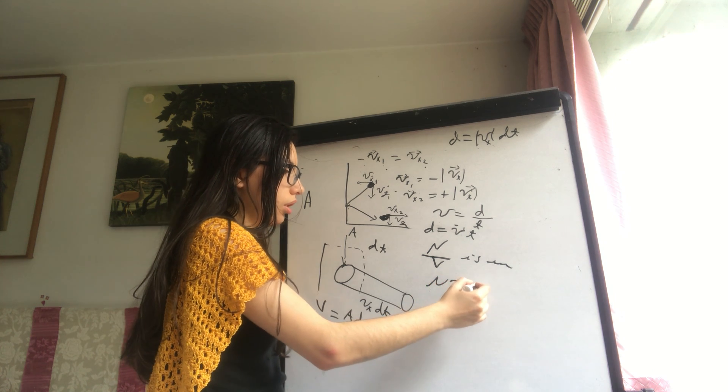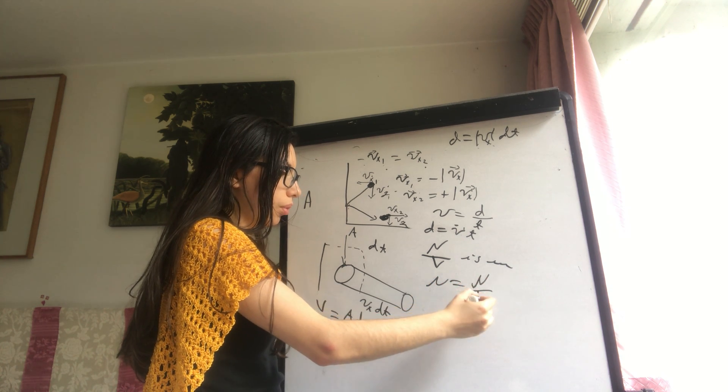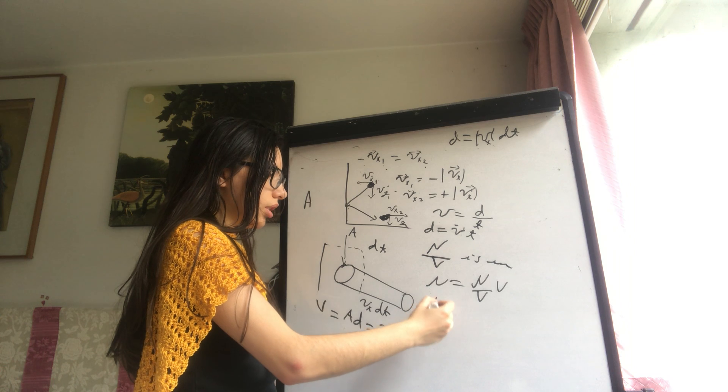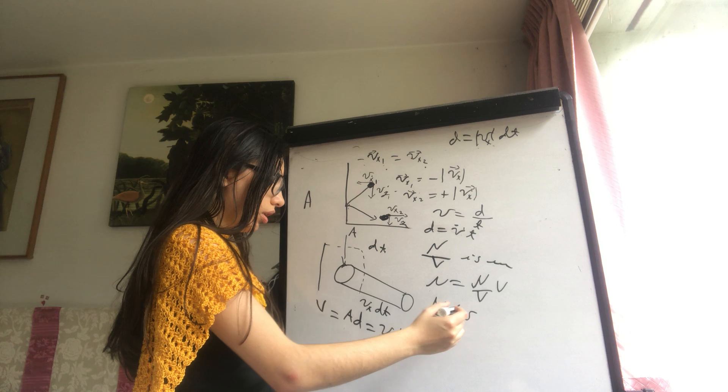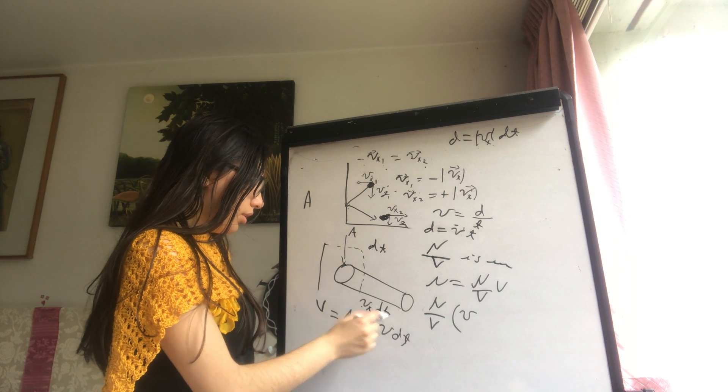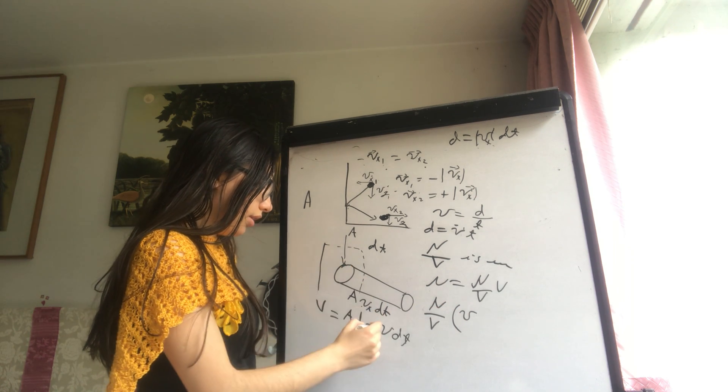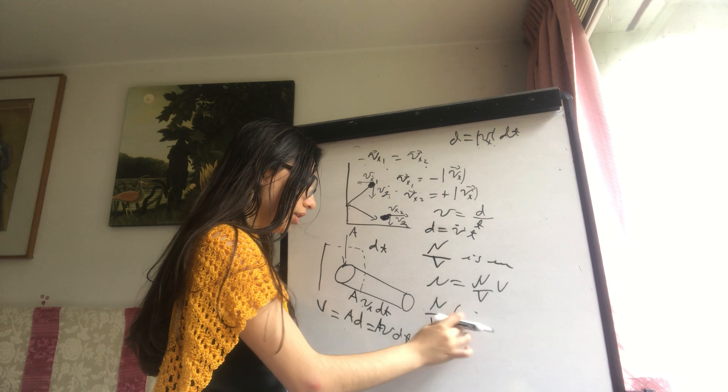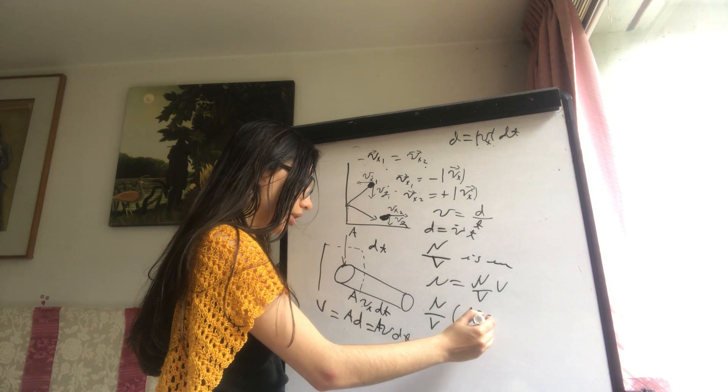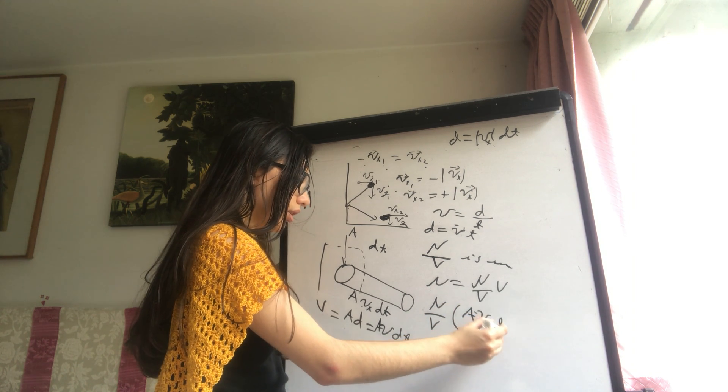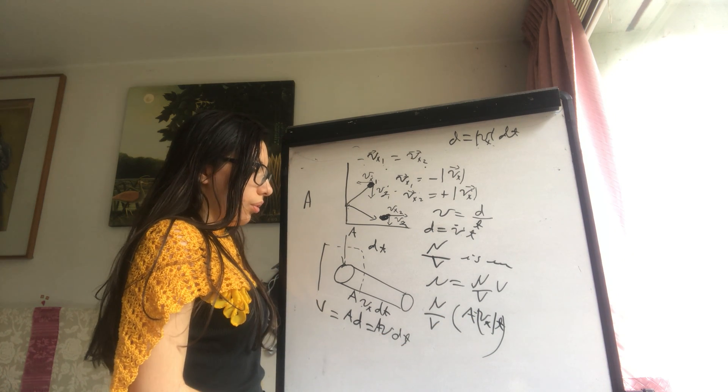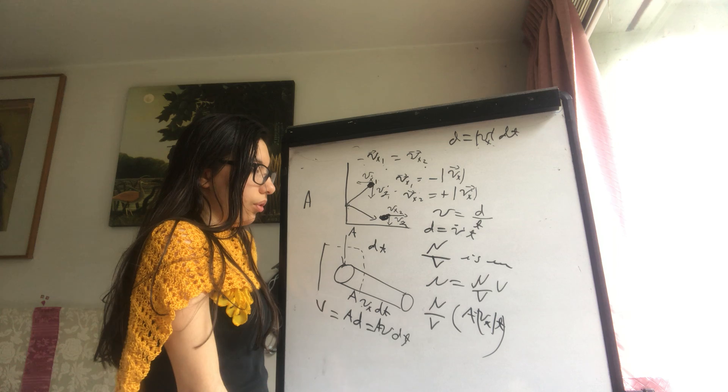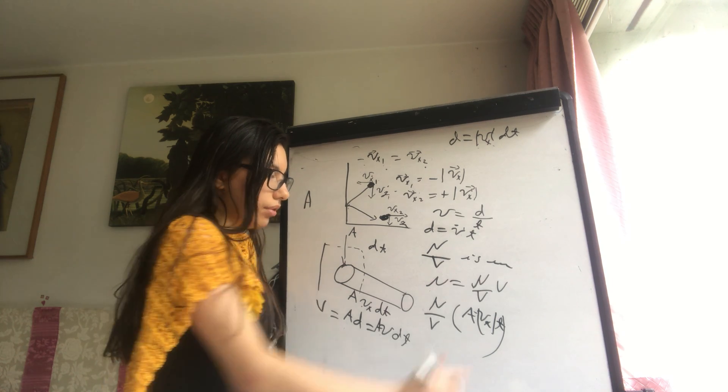So N equals N over volume times volume, which is N over volume times the area times the velocity X times time.